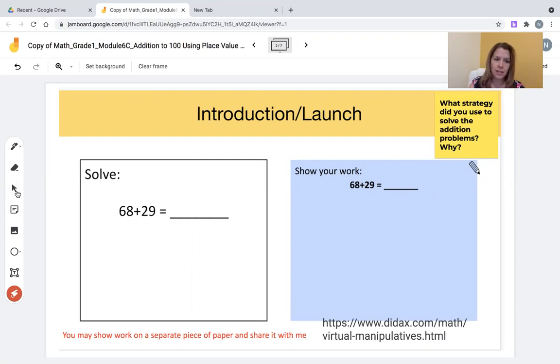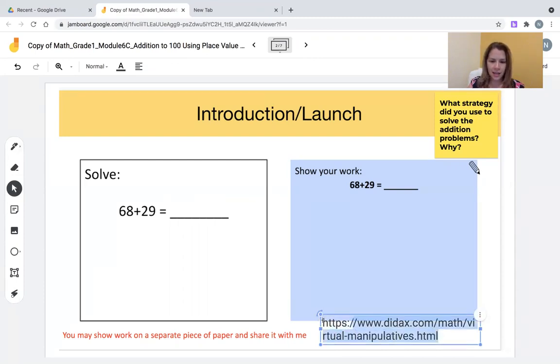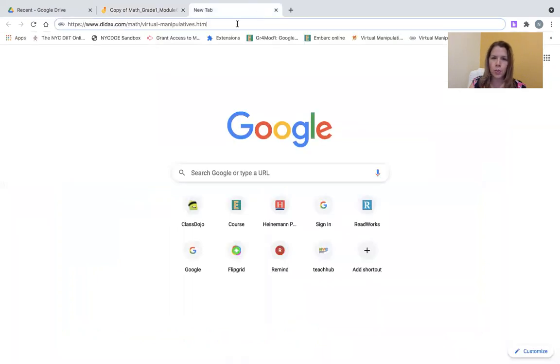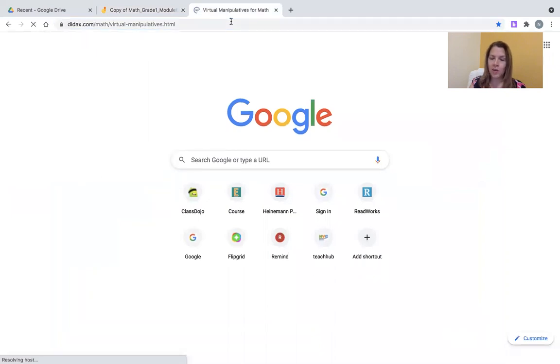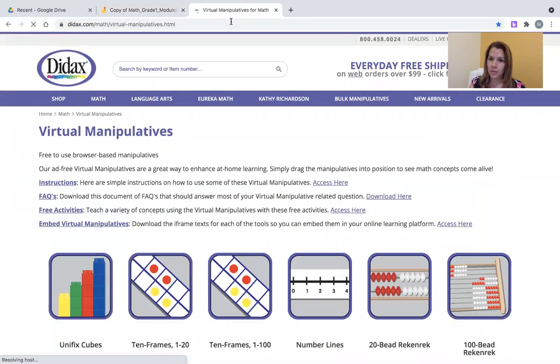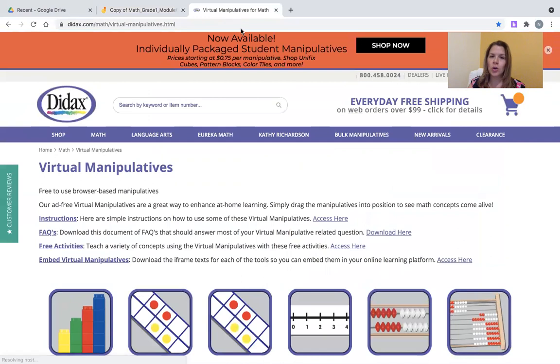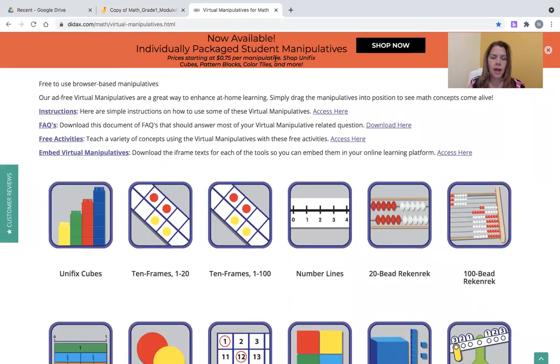I'm going to click on the select tool on the Google Jamboard, which is the third tool on the left. Then I'll click on the bottom where there is a link. Once you click on this link and copy this link and place it in a new browser, you will be able to open virtual tools.